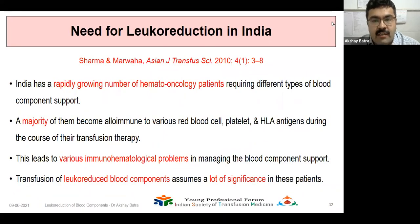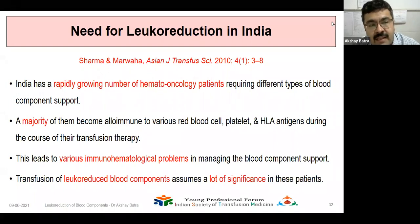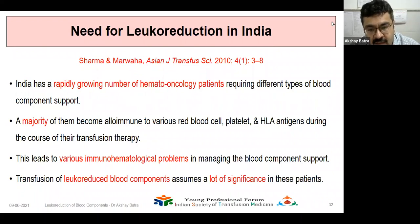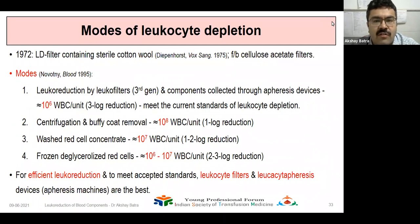The need for leukoreduction in India has been reviewed by RR Sharma and co-authors in 2010. India has a rapidly growing number of hemato-oncological patients who require different types of blood component support. A majority become alloimmune to various red blood cell, platelet, and HLA antigens during the course of their transfusion therapy, leading to various immunohematological complications. The transfusion of leukoreduced blood components assumes a lot of significance in these hemato-oncological patients.